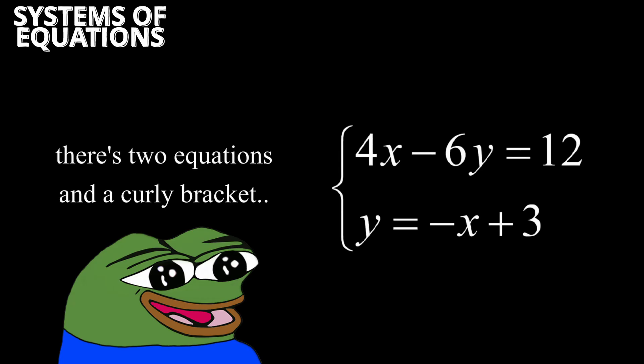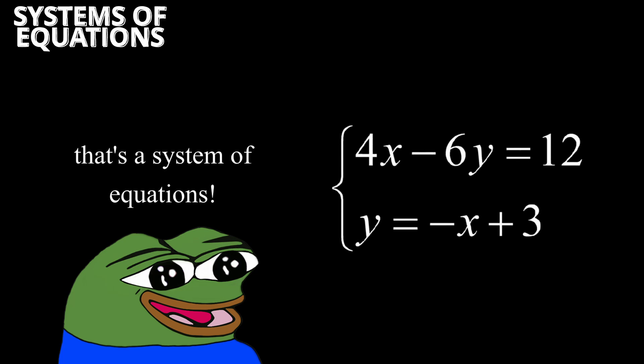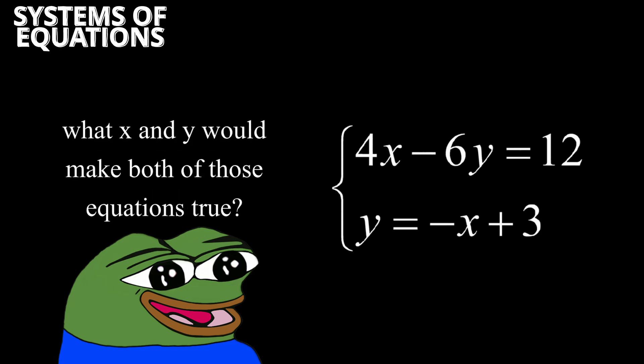Systems of Equations. Sometimes we have two or more equations that we need to solve together. This is called a system of equations. The goal is to find values for x and y that make both equations true at the same time.